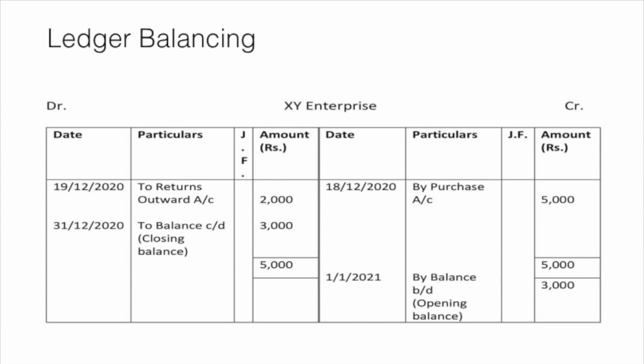This is the closing balance, written as 'To Balance c/d' — c/d means carried down. The same amount is again written on the credit side as 'By Balance b/d' — b/d means brought down. It is also known as the opening balance, and the amount will be the same: 3000. The closing balance is on 31st December. The immediate next day, 1st January, the opening balance is Rs. 3000 on the credit side. This is the procedure of balancing an account.